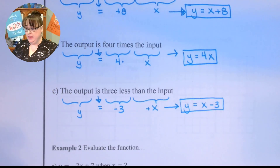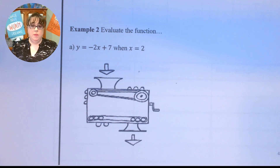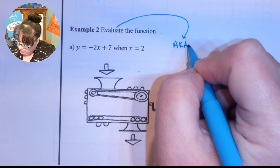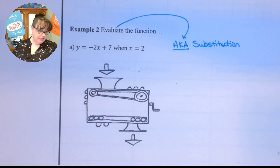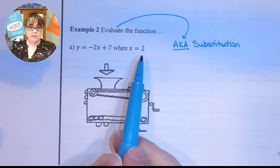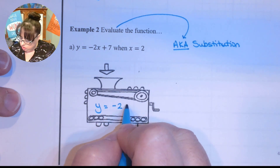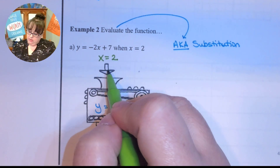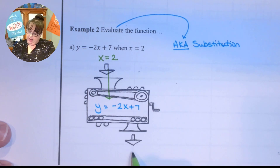The other thing we're going to do is evaluate the function, which is when you get to do some fun things with functions. When you're talking about evaluating functions, you have a function machine — that means you are going to do something to your number. We just call it substitution. So every time I see an x I'm going to put in a 2. The function machine is called y equals negative 2x plus 7. I'm going to put the number 2 into the machine, and every time it sees an x it's going to substitute 2 into it.